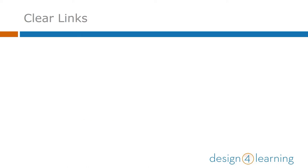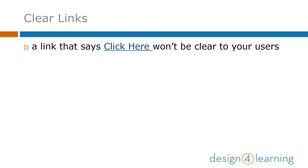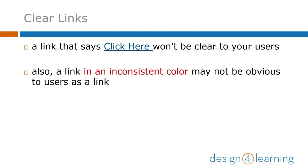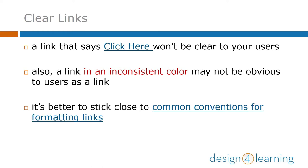What about links? A link that says 'click here' won't be clear to your users, especially if they're using assistive devices. They need some context about where they'll go if they click. Also, a link in an inconsistent color may not be obvious to users as a link, especially if there are places where colored text is used for emphasis instead of a link. It's better to stick close to common conventions for formatting links. Blue text with underlining is the most recognizable.